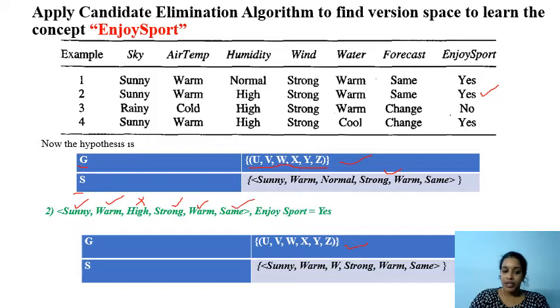So any value like normal or high for the attribute humidity accepts the training instance, and on that day we can play games. So any value is okay for attribute humidity.